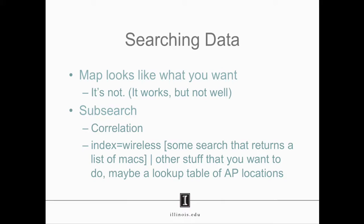A quick note about searching data: if you're trying to do correlation, 'map' looks like what you want, but it's terrible for performance. What you want to do is subsearch. If you're trying to correlate data with Splunk — and this is what we've learned over the past year and a half — doing something like 'index equals wireless,' and then inside brackets another search that returns a list of MACs, will search the wireless index for those MACs and then you can do other things with the results.